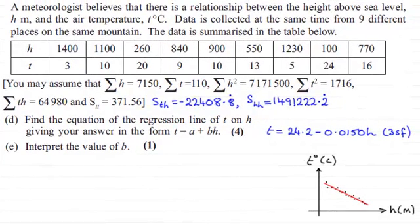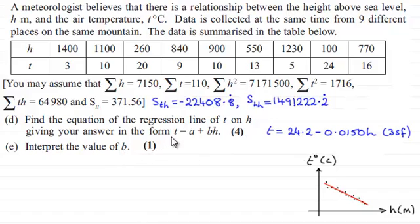Hi there. In Part E of this question we're asked to interpret the value of b for one mark in the equation of the regression line t equals a plus bh, which we worked out in Part D to be equal to this equation here.